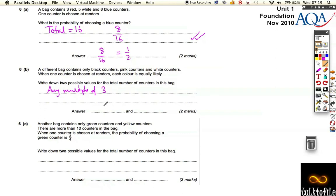So you could choose three, six. It could be nine, it could be twelve. Anything you can divide by three. So you just need to choose two numbers you can divide by three.